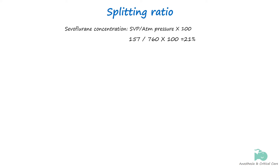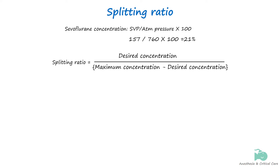To achieve a 2 percent concentration of sevoflurane, the splitting ratio can be calculated using the formula. Plugging in the values, we get a splitting ratio of 0.11. This means that approximately 11 percent of the fresh gas flow will pass through the vaporizing chamber to pick up sevoflurane, while the remaining 89 percent will bypass it.